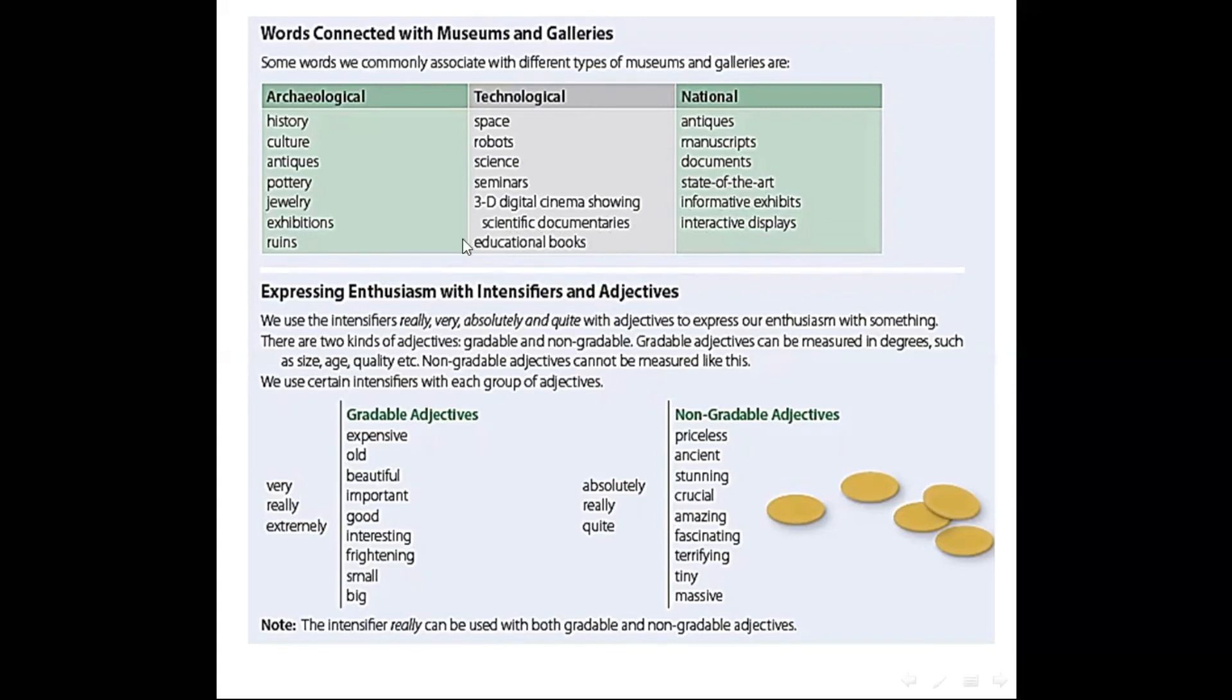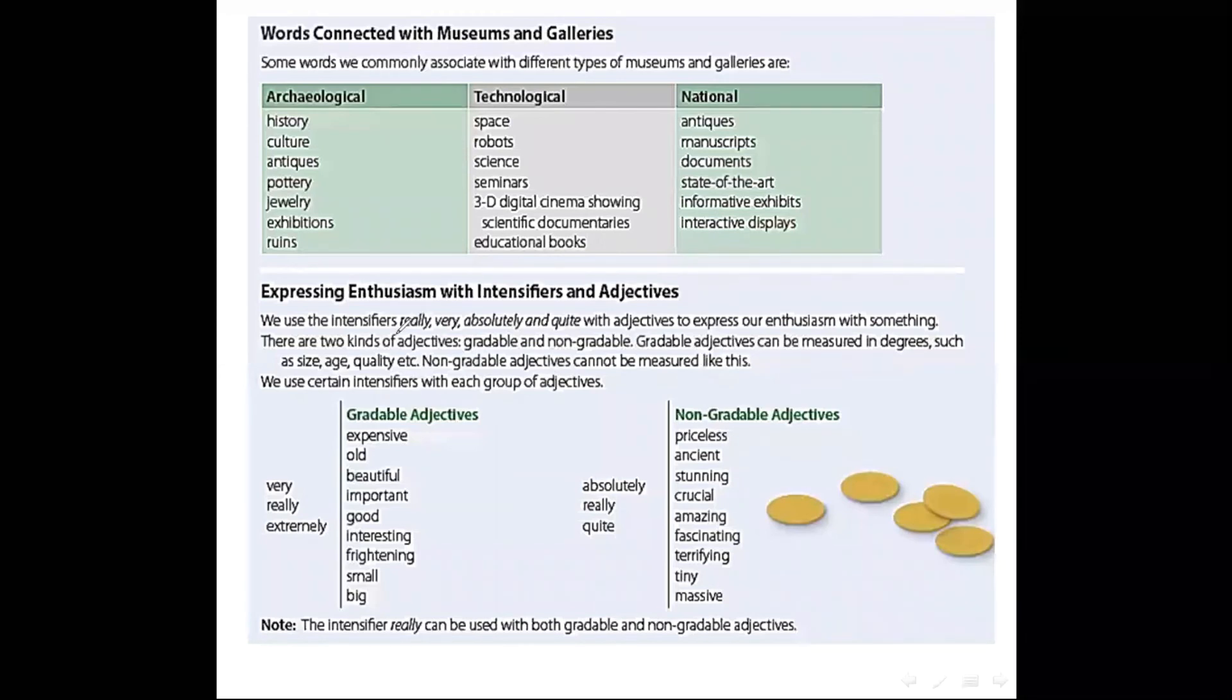Now, we will be expressing enthusiasm with intensifiers and adjectives. We use the intensifier really, we will underline these words please. We use the intensifier really, very, absolutely, and quite with adjectives. Why? To express our enthusiasm with something. There are two kinds of adjectives. What are they? Gradable and non-gradable. What's the difference between two kinds of these adjectives? Let's know now.